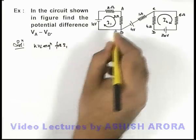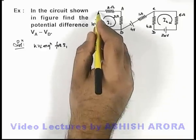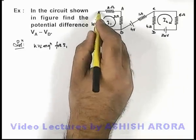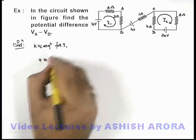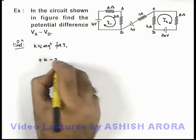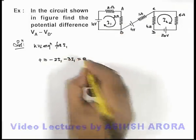And for this if we start from this point, then on moving along with the current we can see we are getting a gain of 10 volt. Then it is minus 2i_1, then it is minus 3i_1, and at the end of the loop it should be equal to zero.